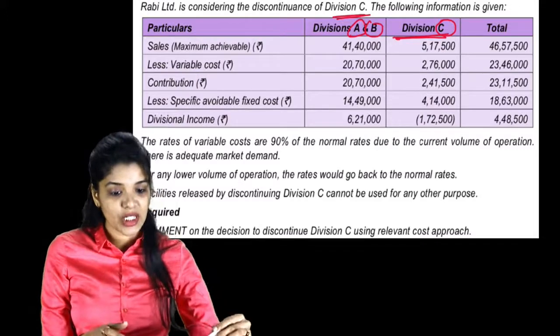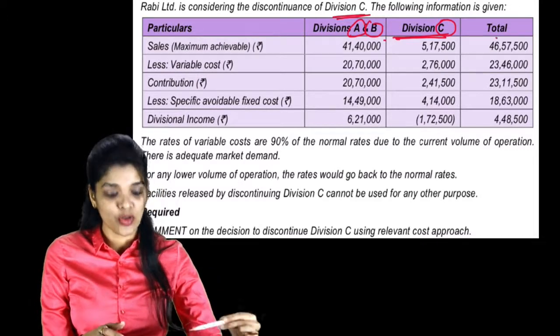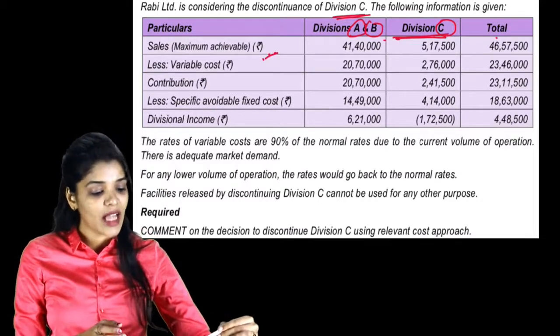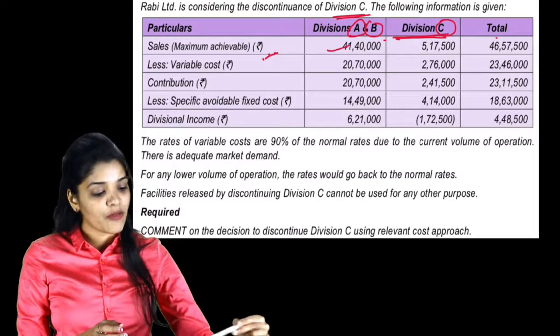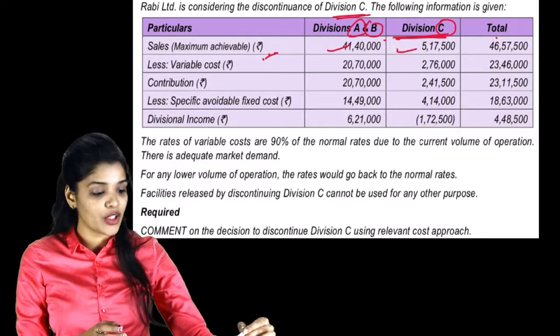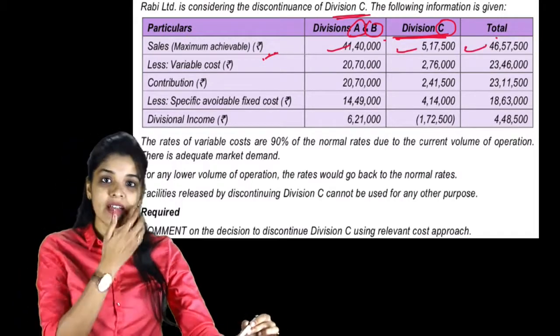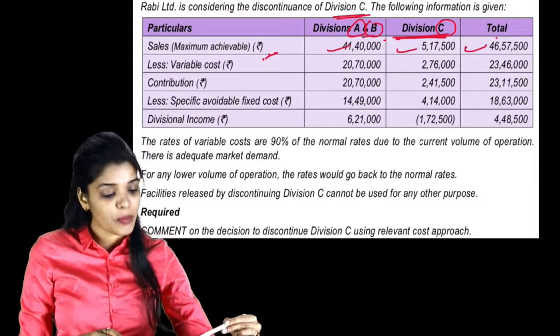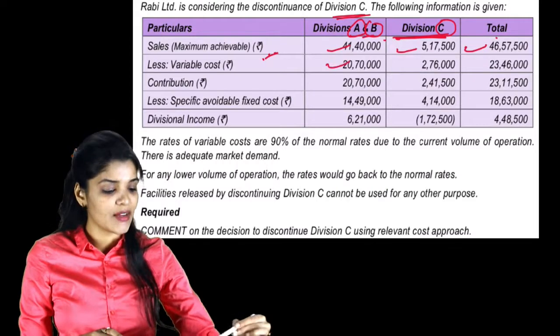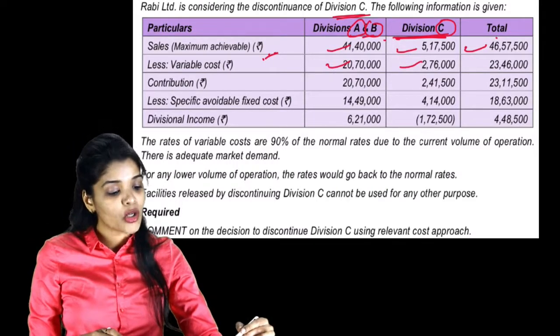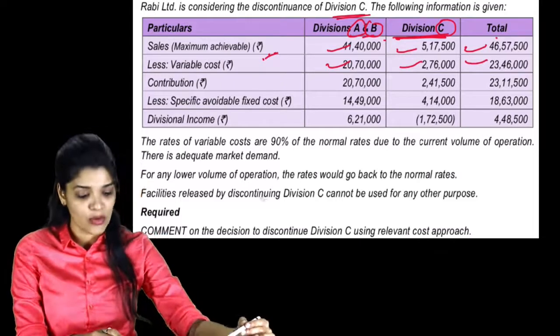Particulars Division A and B, Division C and Total. Sales Maximum Achievable - maximum sale that can be achieved - 41,40,000 for Division C 5,17,500, Total 46,57,500. Less variable cost - Division A and B cost is 20,70,000, Division C 2,76,000, Total 23,46,000.